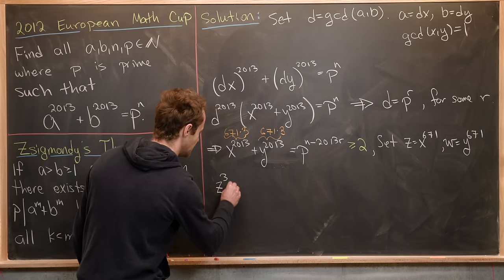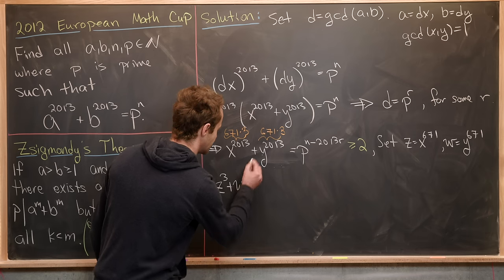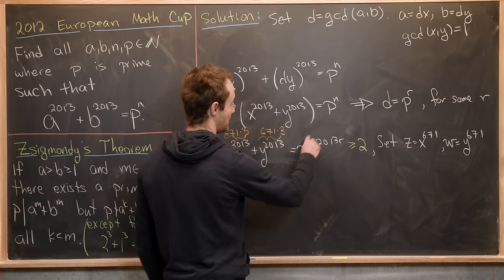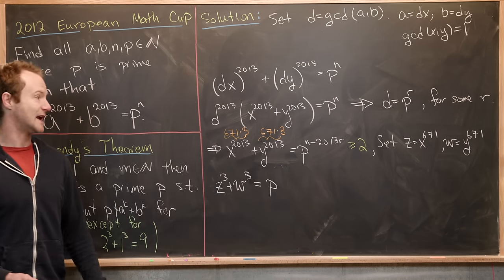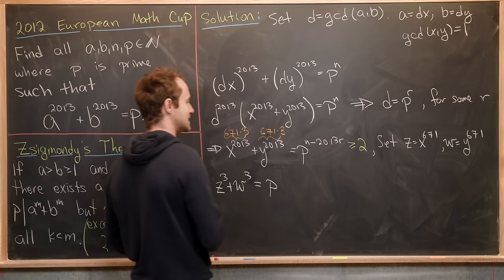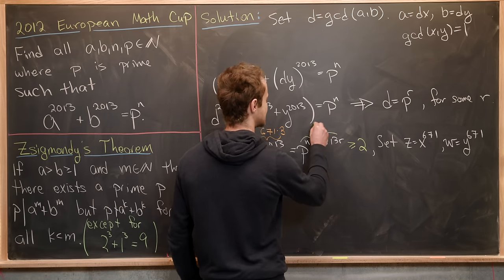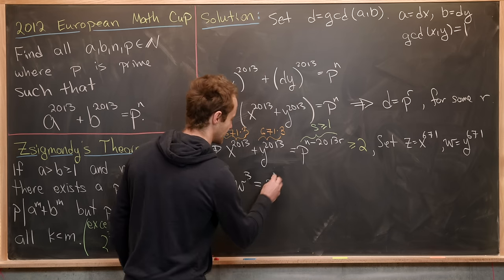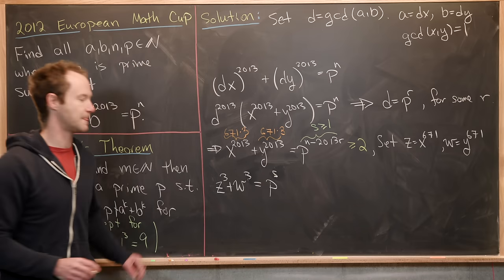That'll give us z cubed plus w cubed equals p to a power, which is n minus 2013 times r. But let's rename this thing as well. Let's rename this thing s, and notice we know that s is bigger than or equal to 1. So that's another thing that's pretty important to notice.